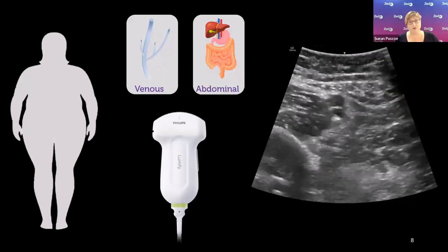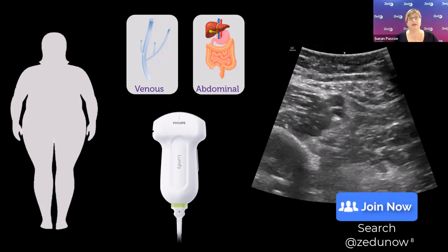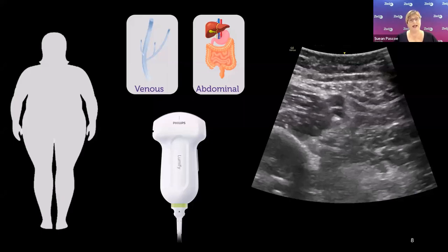For a larger patient or someone with oedematous legs you may need a curved probe. Choose a venous preset if available, but many machines don't have one for the curved probe, in which case use an abdominal preset. With an abdominal preset, adjust the dynamic range, bring the depth up from the liver-optimised setting, and try to make your curved-array sector field of view look as much like a linear probe as possible so you don't get lost.